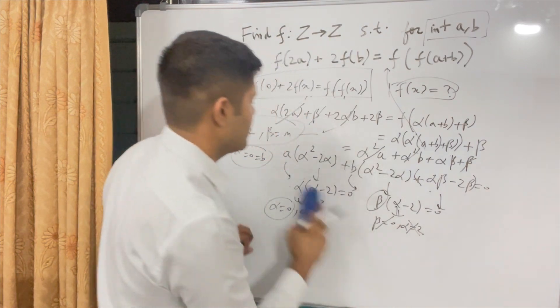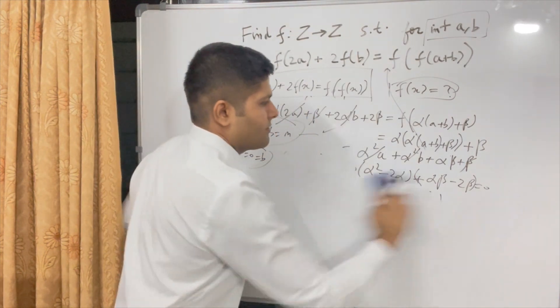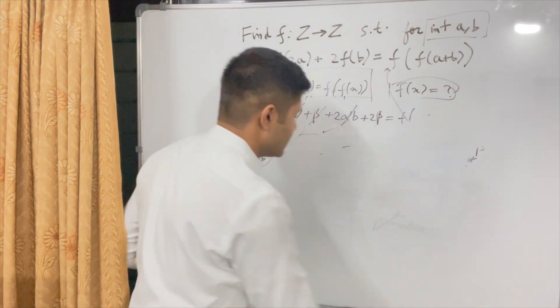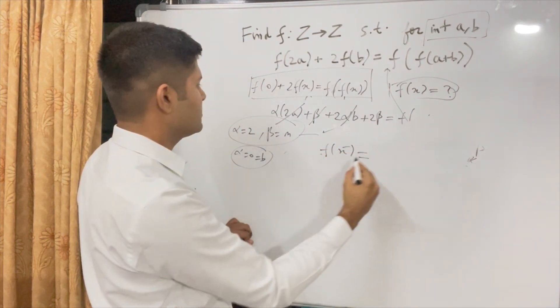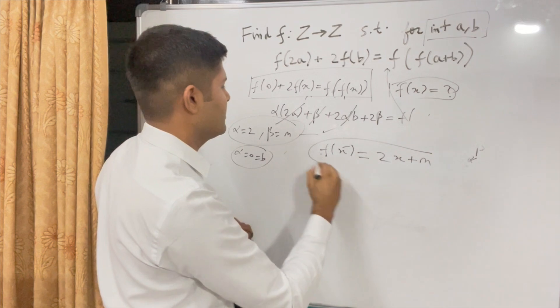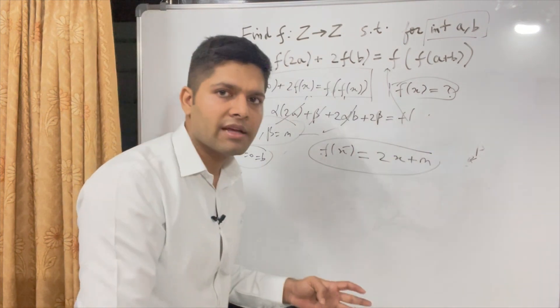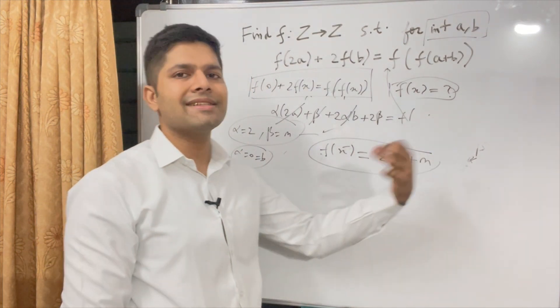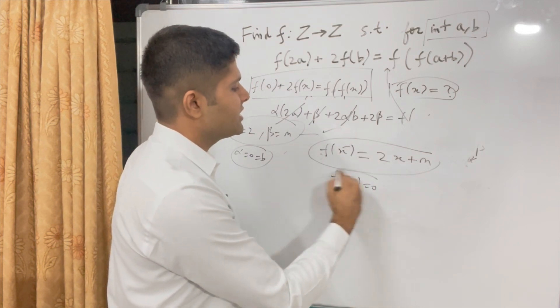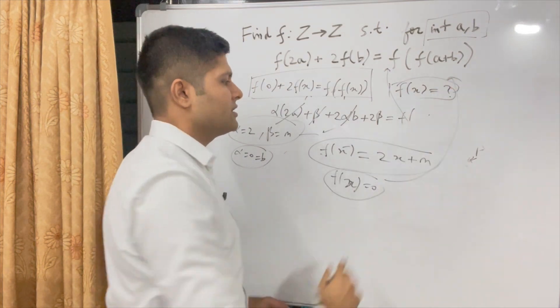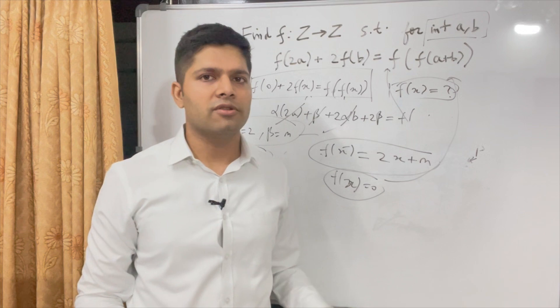So to conclude it all, what you find out is that f(x) = 2x + n, where β can be anything. So it is a linear of the form 2x + n or f(x) is 0. You can try plugging in these values. This function will be satisfied and these are all the possible solutions.